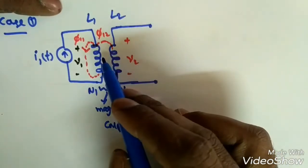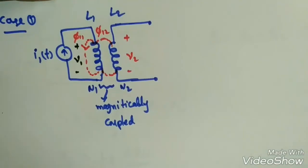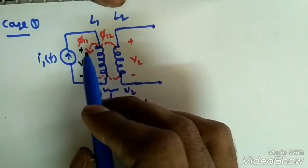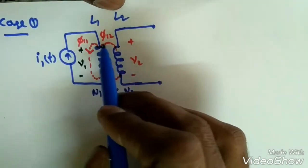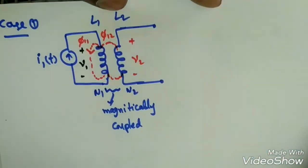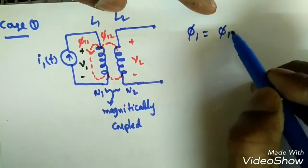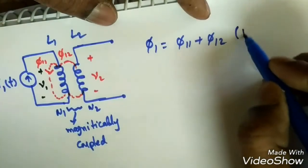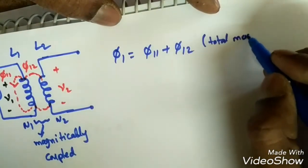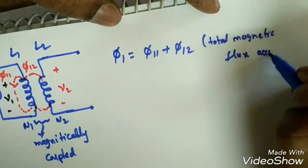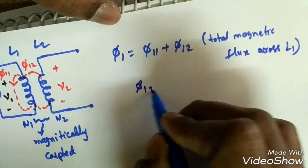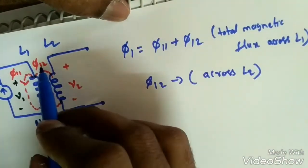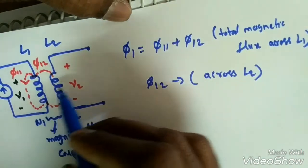Coil L1 has N1 turns and coil L2 has N2 turns. Due to current i1 in L1, the flux Φ11 is generated in L1 itself and flux Φ12 is also generated in the adjacent coil L2. The total flux across L1 is Φ1 = Φ11 + Φ12, while Φ12 is the flux across L2.